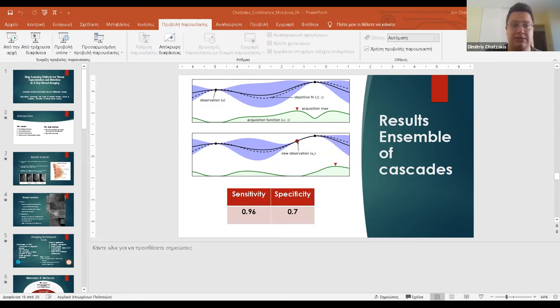The lesions that occur are masses, tumors actually, that can be circumscribed, well-defined, or indistinct, which are ill-defined, or speculated, as can be seen here.